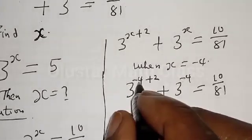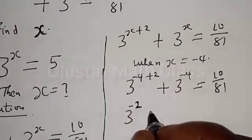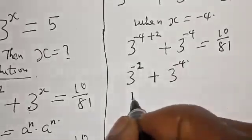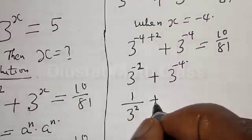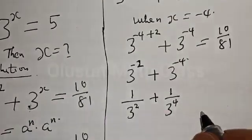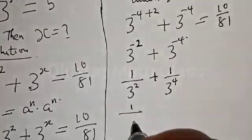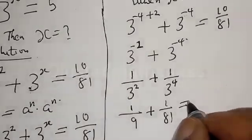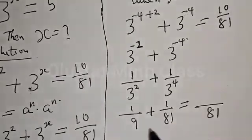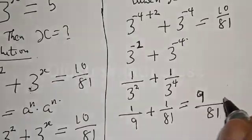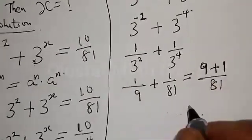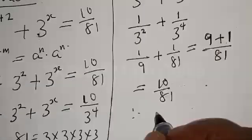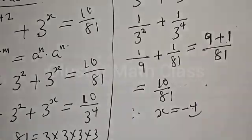Therefore we have 3 raised to the power minus 2 plus 3 raised to the power minus 4. That gives us 1 divided by 3 squared plus 1 divided by 3 to the power 4, which is 1/9 plus 1/81. The common denominator is 81, so that is 9/81 plus 1/81, giving 10 over 81. Therefore x equal to minus 4 satisfies the given equation.